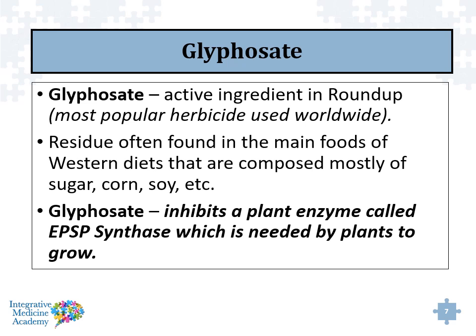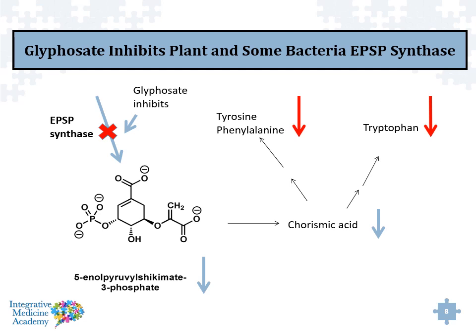Glyphosate is an active ingredient used as a popular herbicide worldwide, sprayed on crops like corn and soy. One of the things it does is inhibit an enzyme called EPSP synthase, which is needed by plants to grow. EPSP synthase inhibits the formation of a chemical called 5-enolpyruvylshikimate-3-phosphate, which becomes chorismic acid, which then incorporates into tyrosine, phenylalanine, and tryptophan metabolism in plants. So if we inhibit it upstream — inhibiting the shikimate chemical and chorismic acid — we eventually inhibit downstream tyrosine, phenylalanine, and tryptophan.